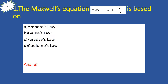First problem: the Maxwell's Equation del cross H equals J plus dou D by dou t is based on which law? From this equation, J is the current density and dou D by dou t is the displacement current density, so this is based on Ampere's Law. Option E is the right answer.